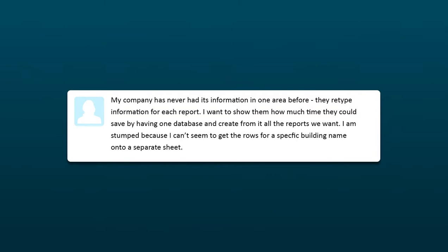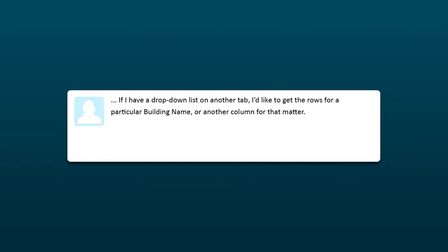Today's question comes in from Rachel in Canada. Considering it was 98 degrees in Southern California today and later this week it's supposed to be 106, Canada sounds really good right about now. Rachel says: my company's never had its information in one area before — they retype information for every report. I want to show them how much time they could save by having a single database and creating all the reports they want from it. I'm stumped because I can't seem to get the rows for a specific building name into a separate sheet. If I have a drop-down list on another tab, I'd like to get the rows for a particular building name. Excellent — thanks for the question, Rachel.